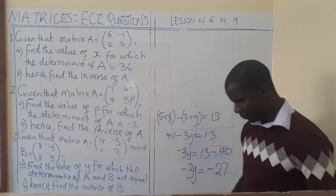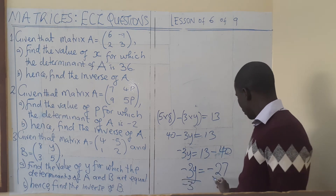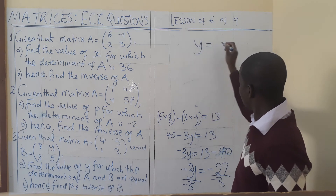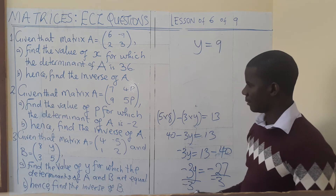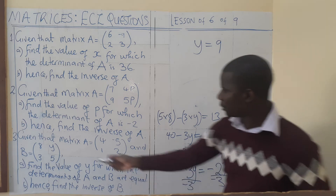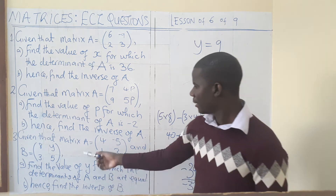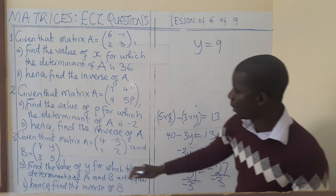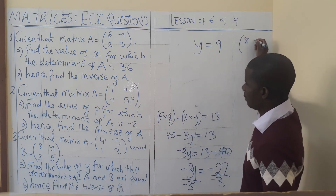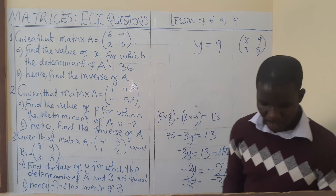We divide both sides by negative 3, so Y equals positive 9. You can substitute 9 back in to verify by working out the determinant and checking you get 13. So when we write matrix B in full, it becomes 8, 9, 3, and 5.